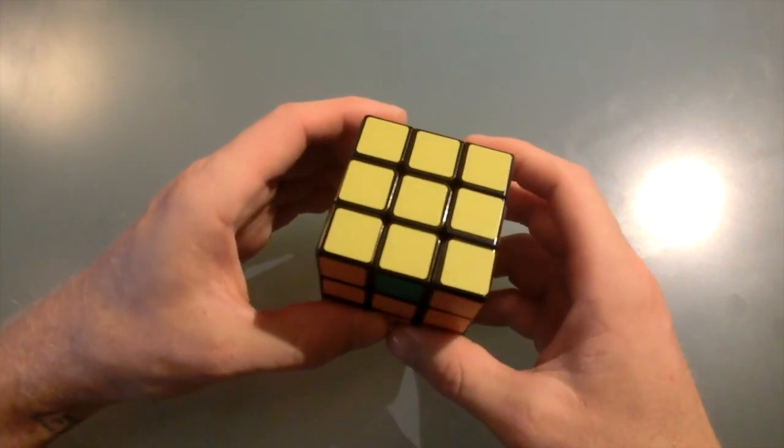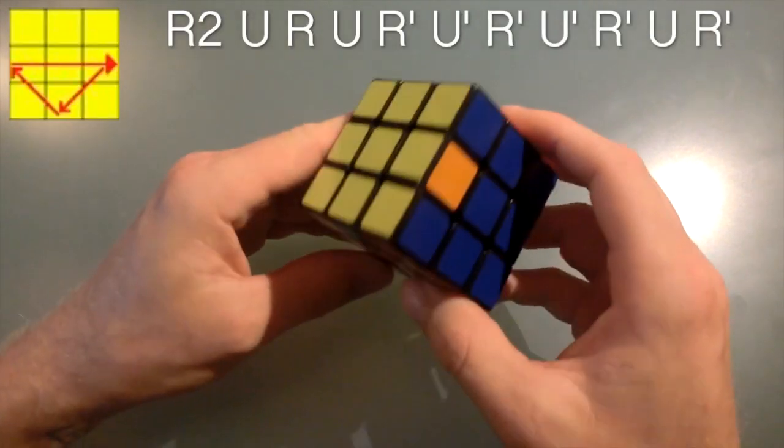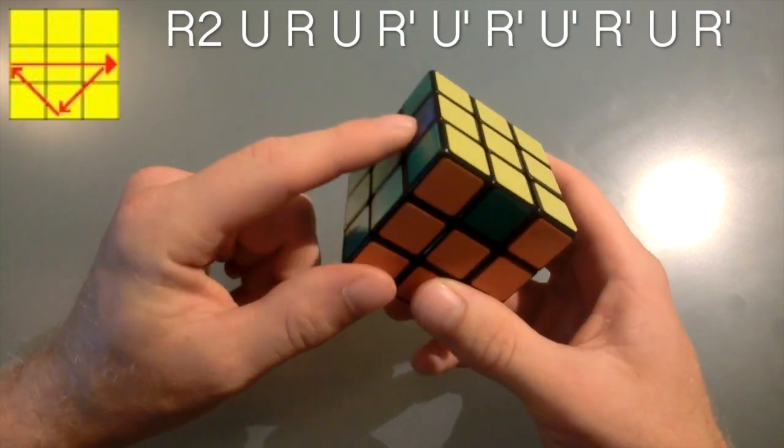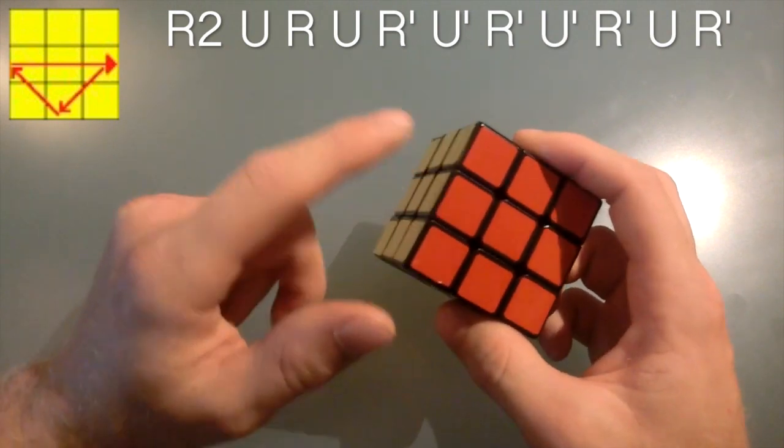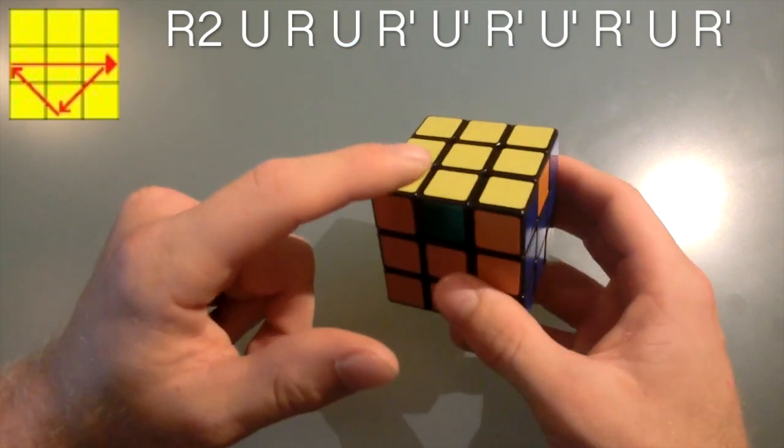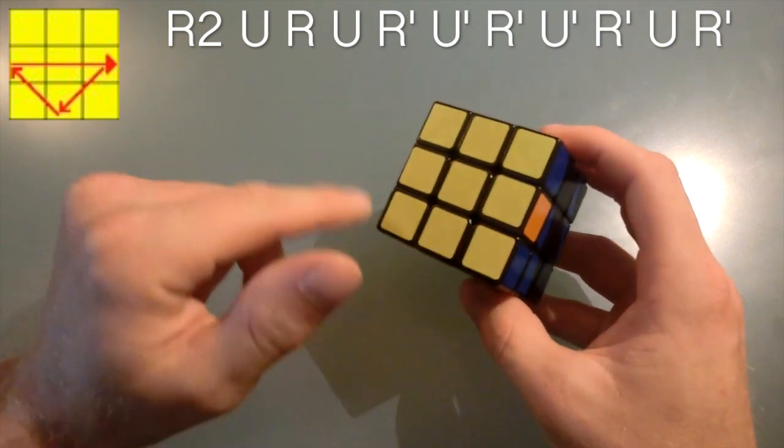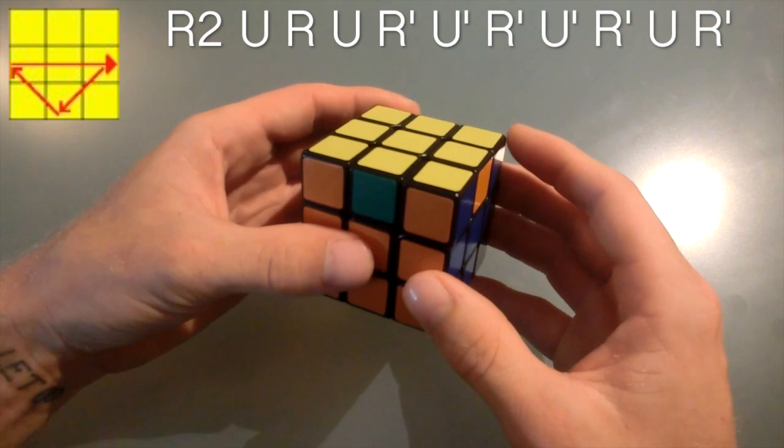Okay, now these ones are called the U perms or UA and UB and they basically do the same thing, just one goes the opposite way. And so you're going to notice here that the blue, the green and the orange are out, the red is still the same. And the orange needs to go here, the green needs to go there and the blue needs to go here. So it's clockwise. And this is called the UA perm and this is what it looks like.